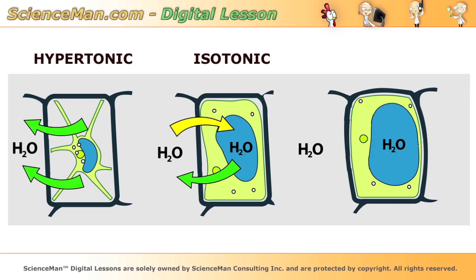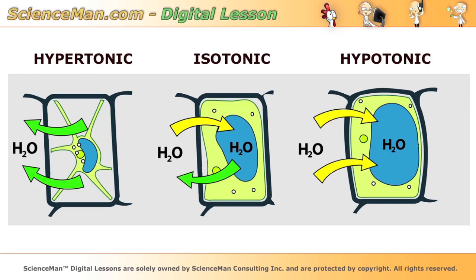Finally, if we place a plant cell into a solution with a lower concentration of particles than inside the cell — otherwise known as hypotonic — then water will move into the cell. Observe the very swollen water vacuole. This is the problem with rain-covered cherries: as water moves into the sugar-filled cells of the ripe cherries, the skin of the cherry can no longer stand the stress and bursts.